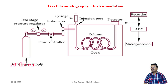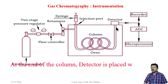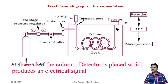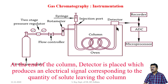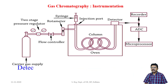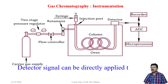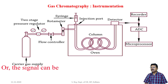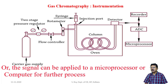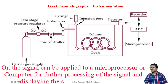At the end of the column, a detector is placed which produces an electrical signal corresponding to the quantity of the solute leaving the column. The detector detects different signals and produces a signal proportionate with the amounts of different components. The detector signal can be directly applied to a recorder for graphical representation, or it can be applied to a microprocessor or computer for further processing and displaying the signal in different ways.